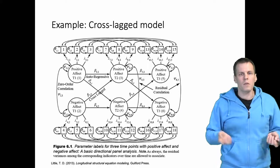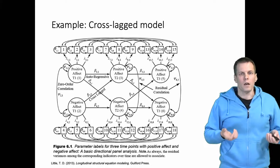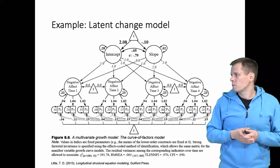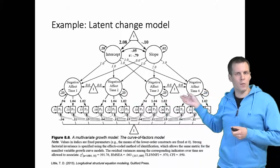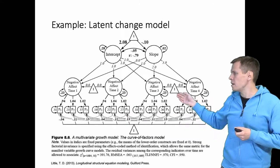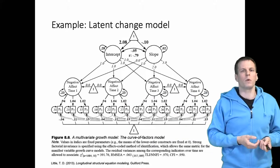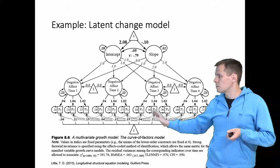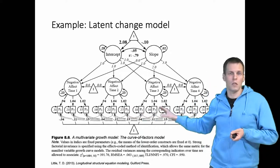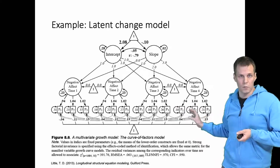The same thing can be seen also in this latent change model. So instead of having observed variables here, we have latent variables and we have means which are typically of interest when we want to model change over time, and we have these correlated error terms that allow the uniqueness to persist over time.